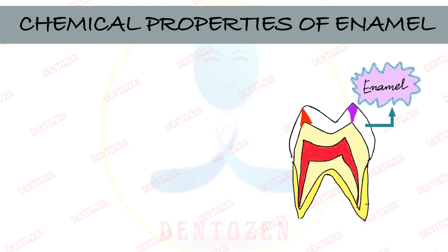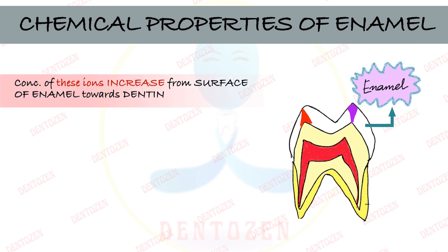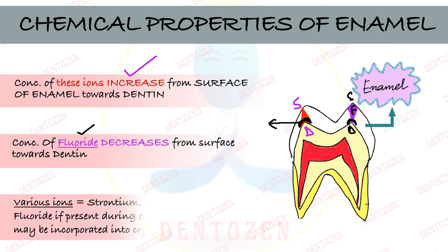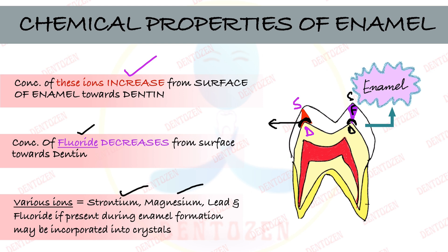The concentration of weaker ions — magnesium and carbonate — increases from surface towards the dentine, meaning these ions are highest near the dentine. These weaker areas are preferentially attacked by caries. Fluoride, which is a stronger ion, decreases in concentration from surface to dentine, making the area near dentine more vulnerable to acid attack.